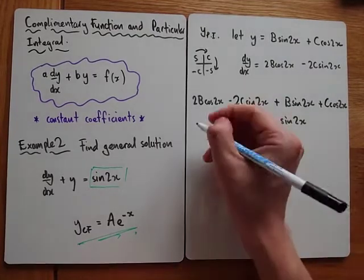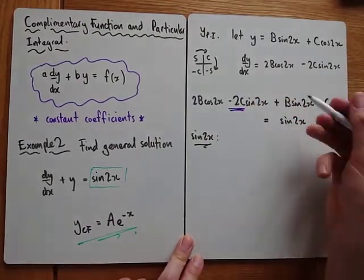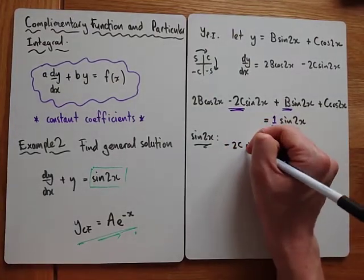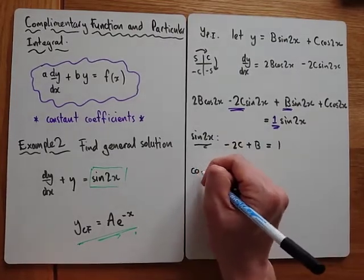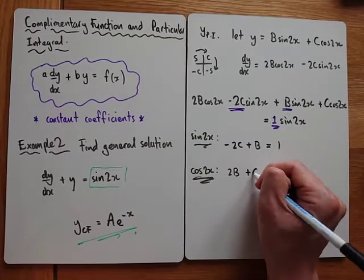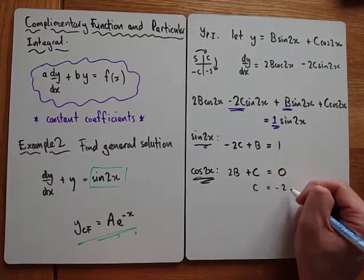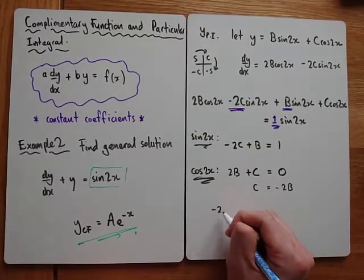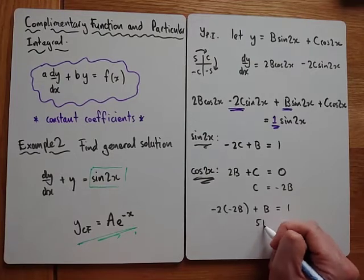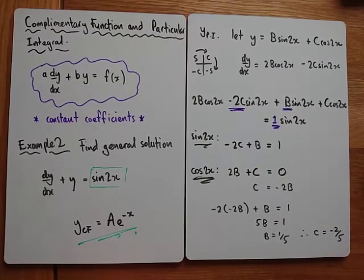This is called equating coefficients. Looking at the sin 2x terms: on the left we have minus 2C sin 2x and B sin 2x, and on the right we have one sin 2x. So minus 2C plus B must equal one. We also equate the cos 2x terms: 2B plus C on the left, and zero on the right since there aren't any. Solving simultaneously: C equals minus 2B, so minus 2(-2B) plus B equals one, giving 5B equals one, so B equals one fifth, and therefore C equals minus two fifths.